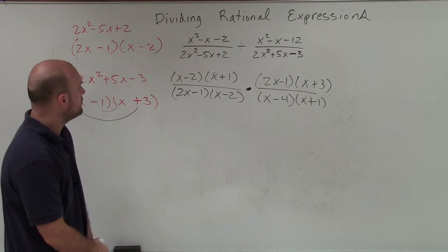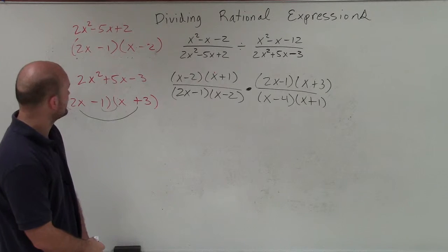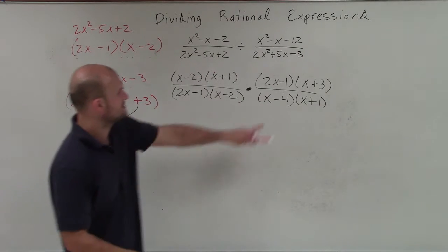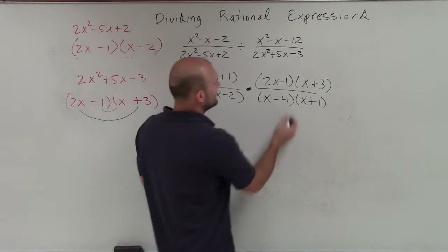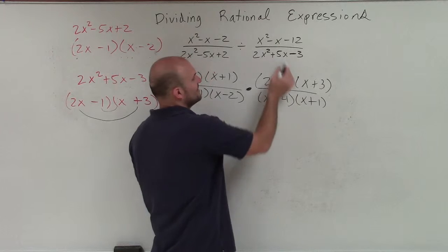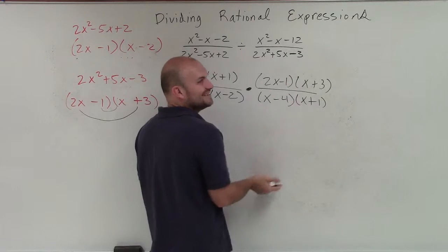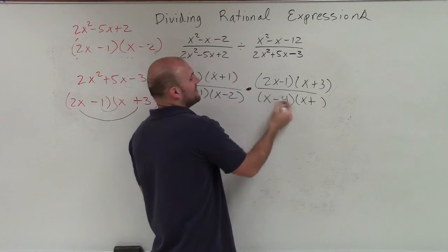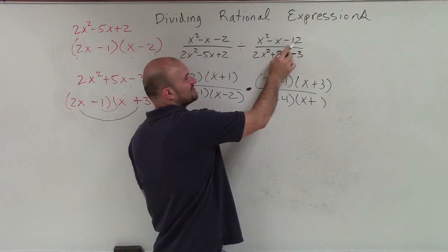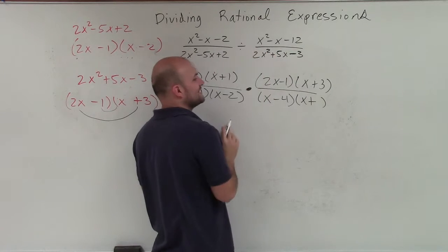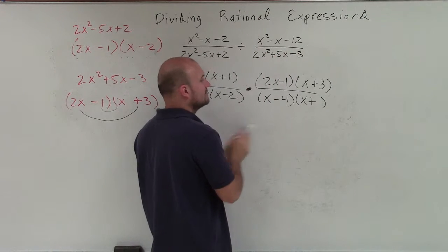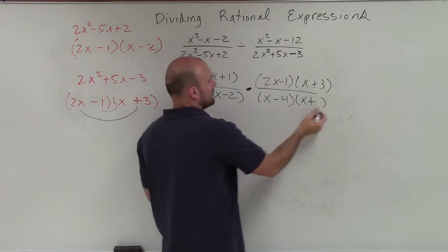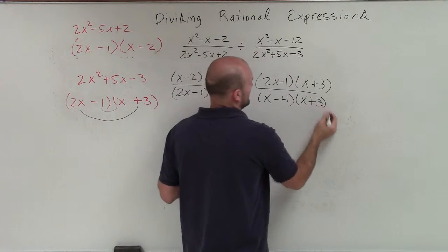Actually, looking at this — that is not right for x squared minus x minus 12. What two numbers multiply to give you negative 12 but then add to give you negative 1? It's going to be x minus 4 and x plus 3.